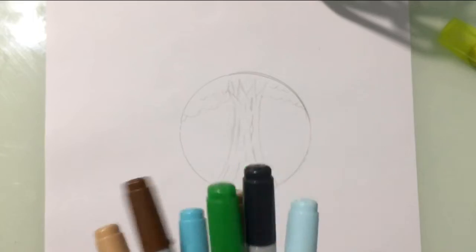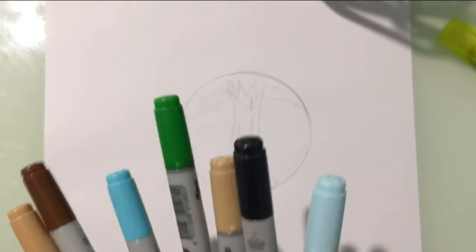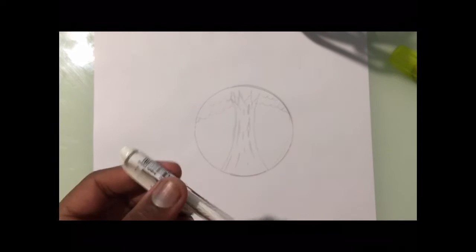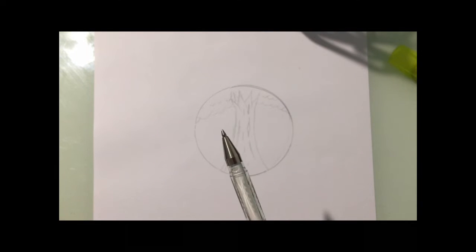Now before the inks, I'm going to use Copic markers, black inks, and I'm going to be using this white pen for the stars afterwards.